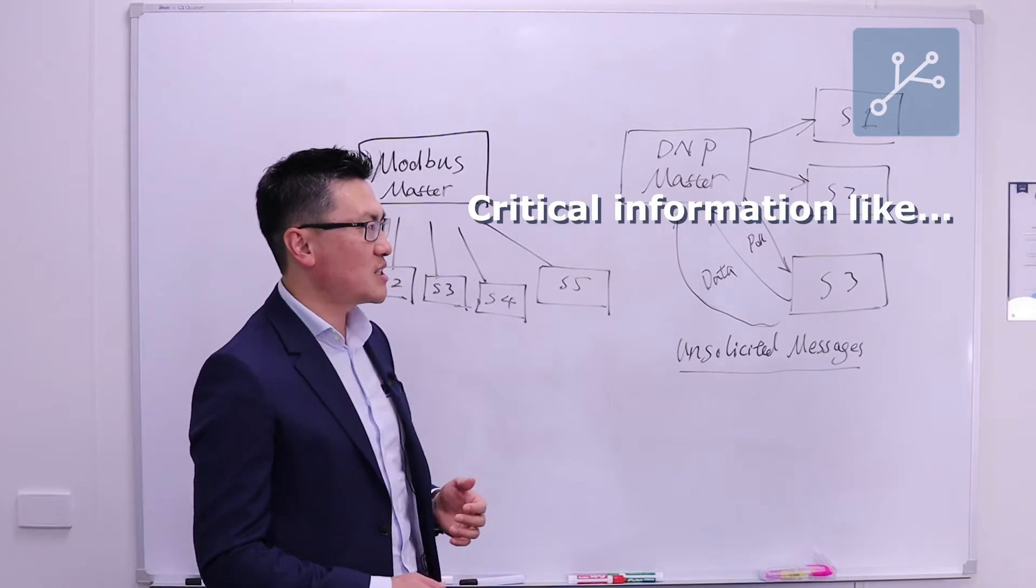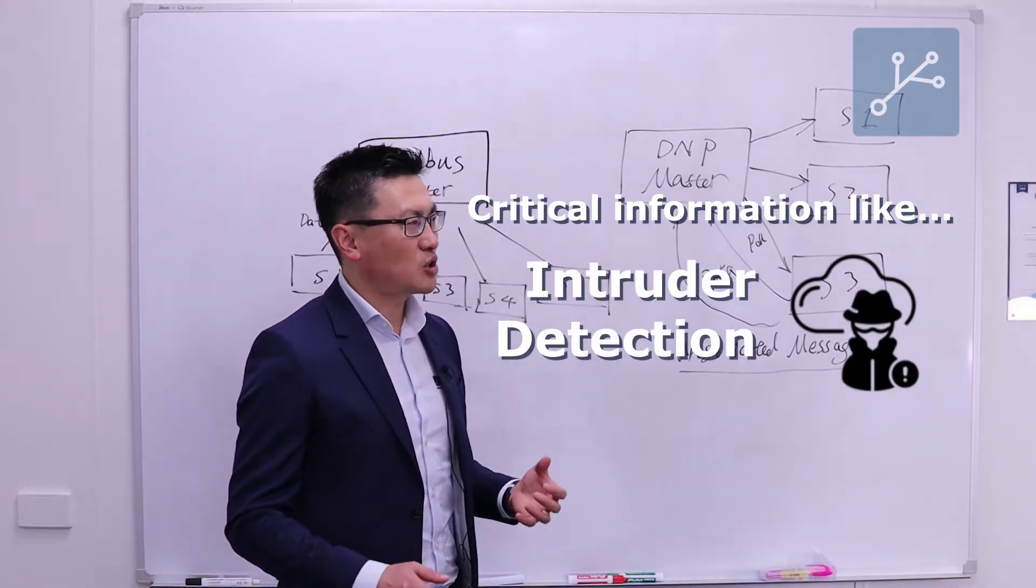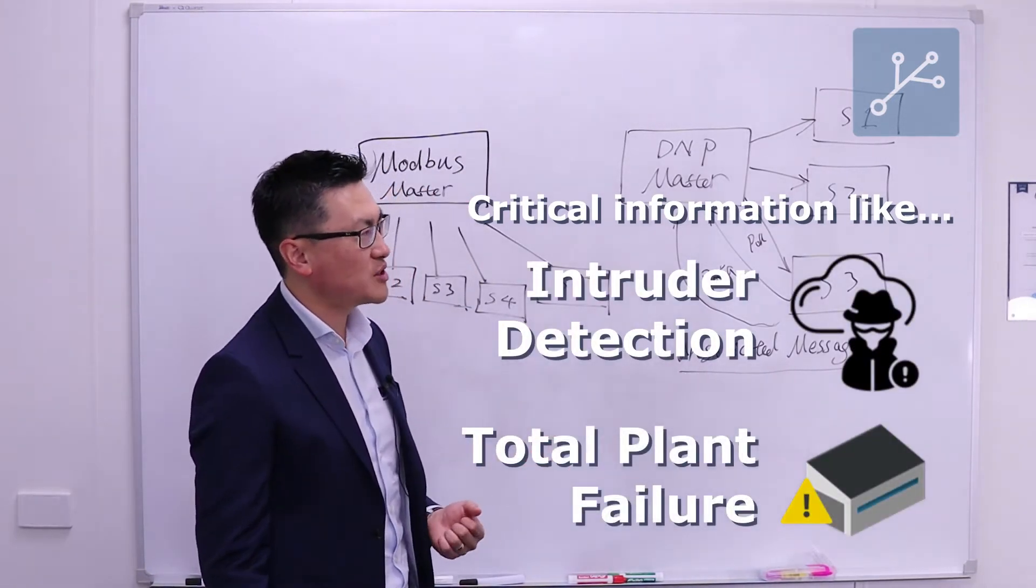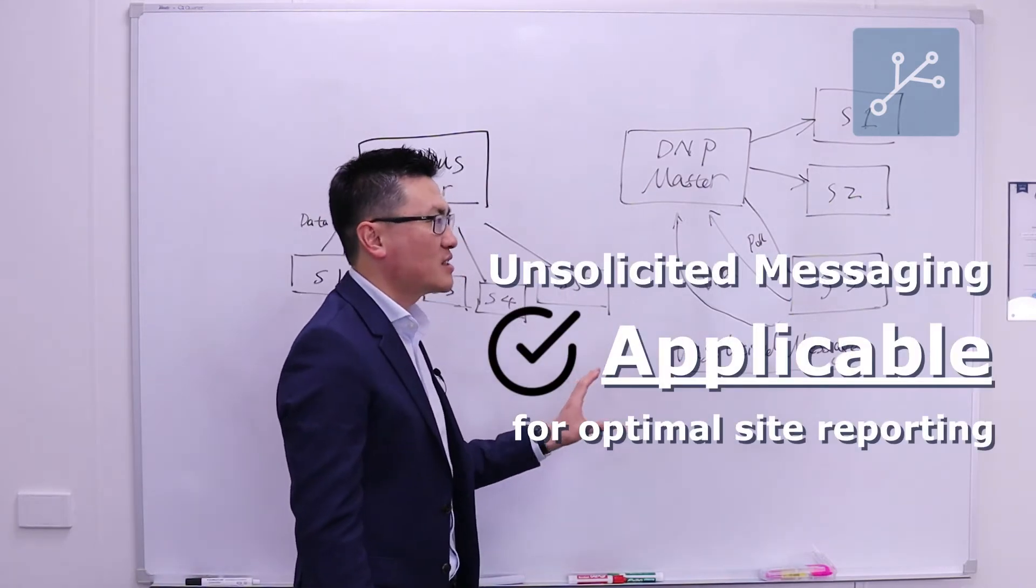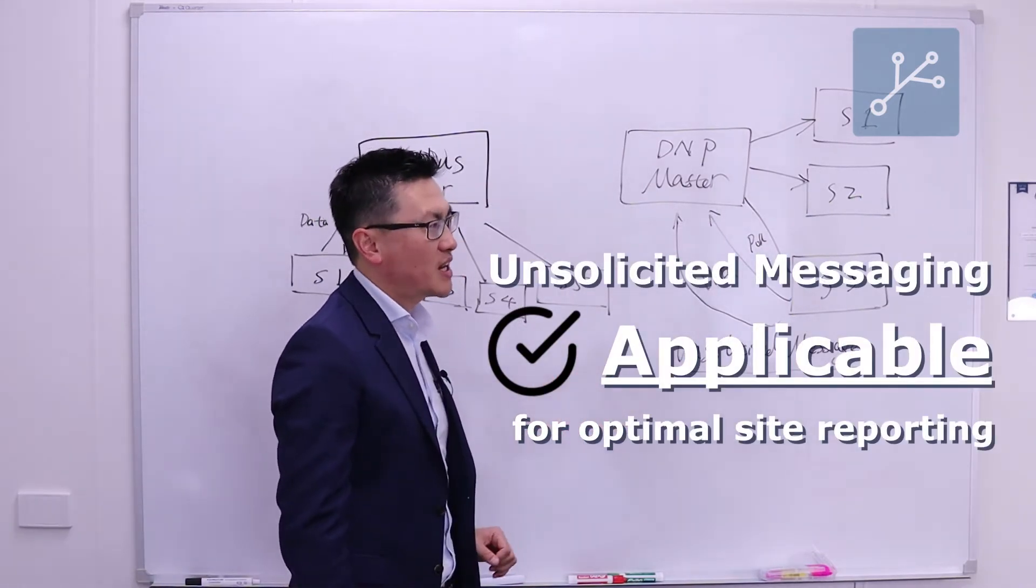For example, some of the data like intruder's fault or total plant failure is highly critical to the client's operation. We then will switch on unsolicited messages feature for those data points.